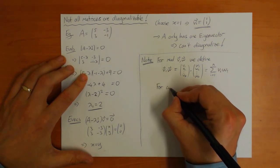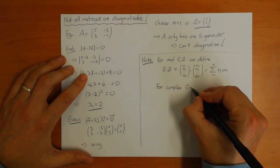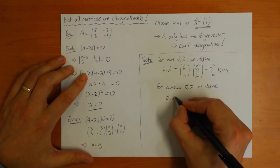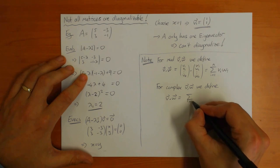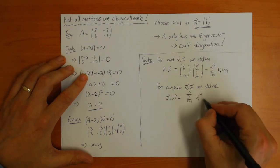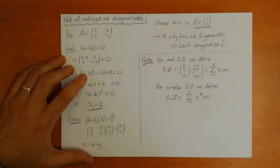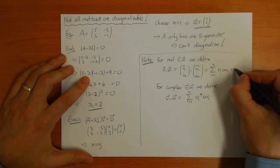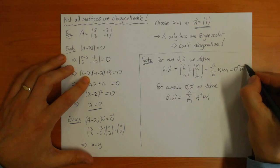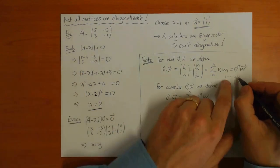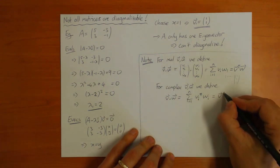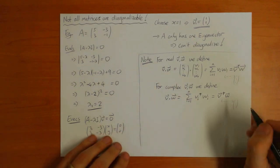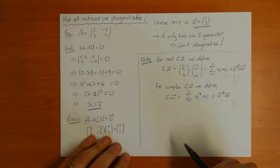You can also define the scalar product for complex vectors, but it's not the same. For complex vectors, you define it with the first vector in the complex conjugate. So I take the complex conjugate of V and multiply it by W. You can write this as V transpose times W, which gives you a vector like this times a vector like that. And this one, you can write as V dagger, the adjoint, times W.